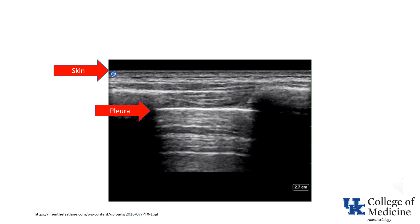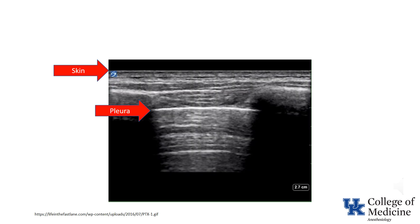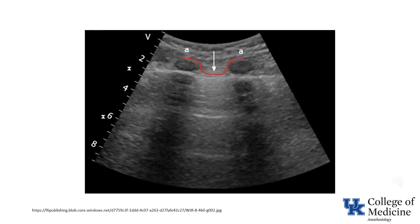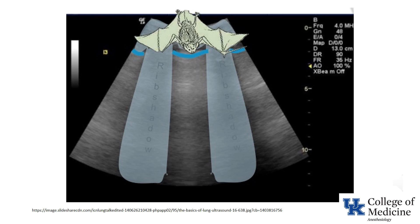This ultrasound demonstrates a normal pleural line. It appears as a horizontal hyperechoic structure below the ribs and represents the interface between the visceral and parietal pleura. The image produced by the ribs with their acoustic shadowing and the hyperechoic pleural line has been termed the bat sign. Purportedly, the pleural line represents the body of the bat and the two ribs represent its wings.